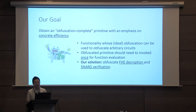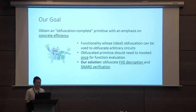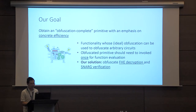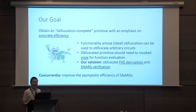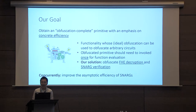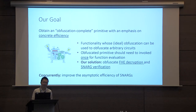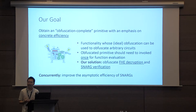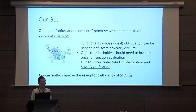Our solution is going to be based on the original bootstrapping constructions for obfuscation. Namely, our obfuscation-complete primitive consists of FHE decryption and SNARK verification. I'm going to get into the details on each of these primitives subsequently in the talk. As a concurrent goal, once we have defined our obfuscation-complete primitive, it really boils down to finding efficient representations of these underlying constructions, namely FHE decryption and SNARK verification. Fully homomorphic encryption seems to be pretty well understood at this point, but an independent goal of this work has also been looking at finding SNARKs with efficient verification processes that are amenable to the existing obfuscation constructions.